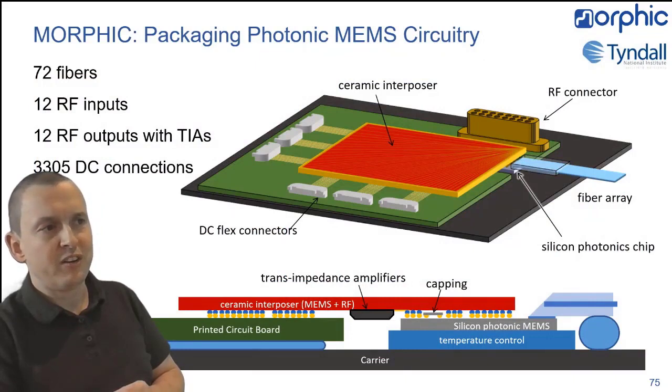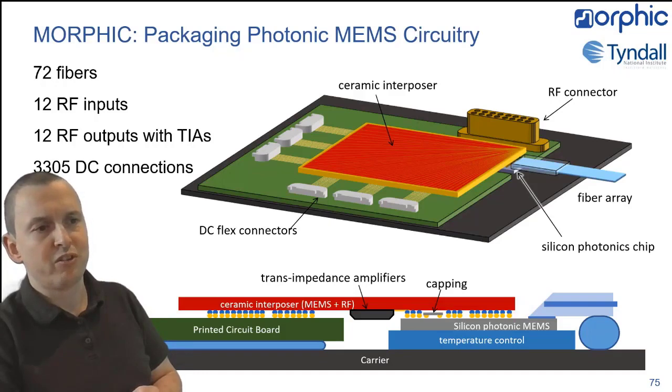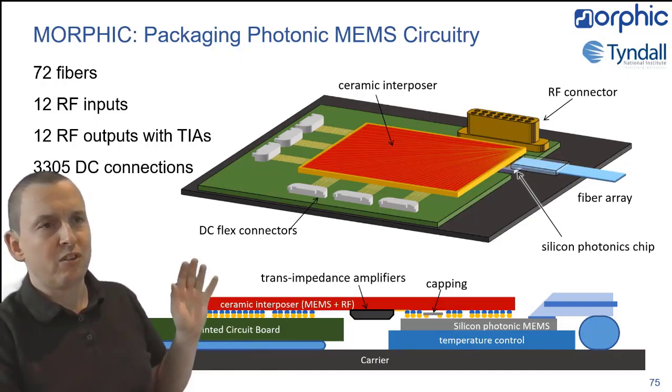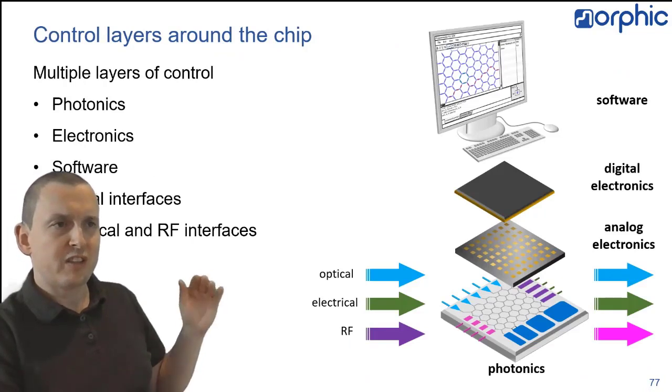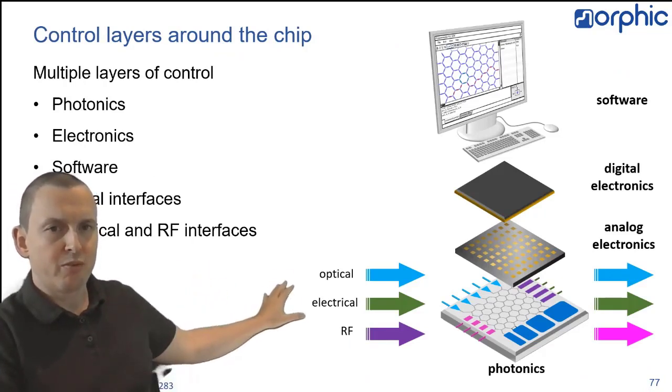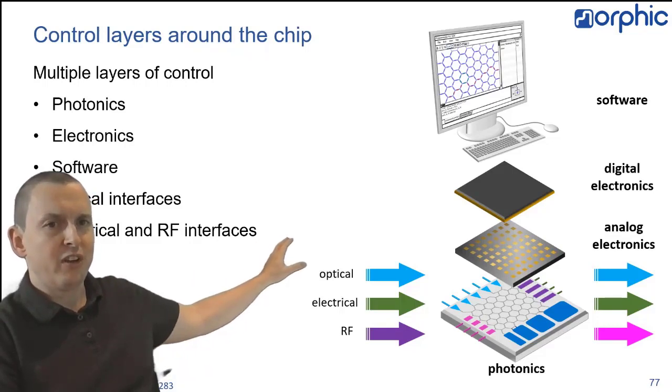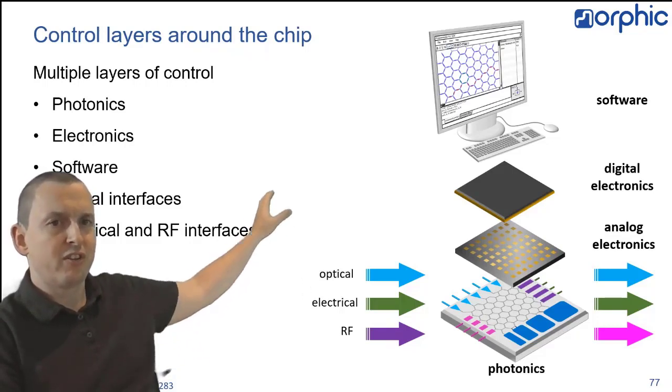Now, to do this, rather than at this point developing an ASIC driver, we're working with off-the-shelf driver electronics, which we connect using a ceramic interposer, and it's a quite complicated interposer because it has to transmit 3000 bond pads out. We use the ceramic interposer and off-the-shelf electronics to connect everything together. So, this essentially brings together an entire technology stack. We have our photonic chip, we have electronics, in this case off-the-shelf electronics, and software.